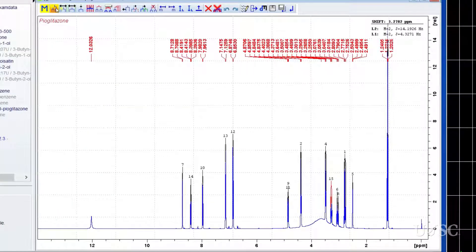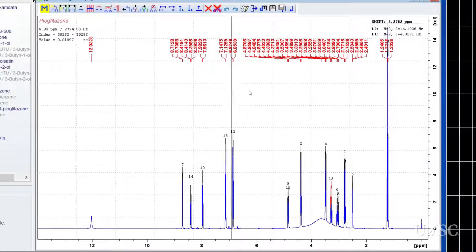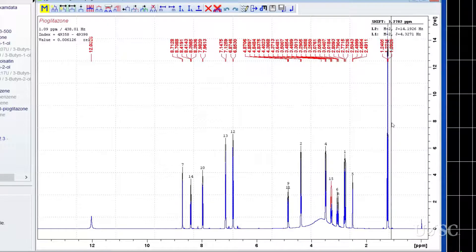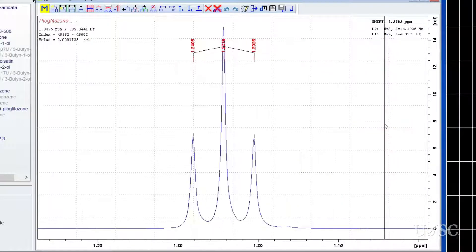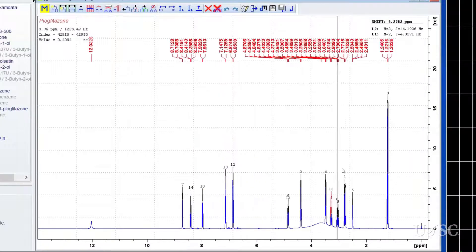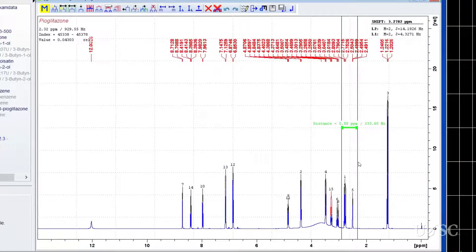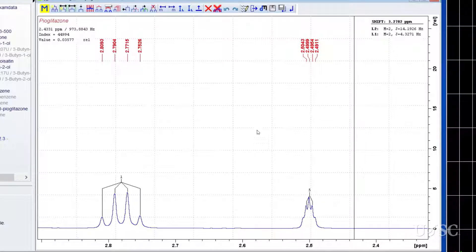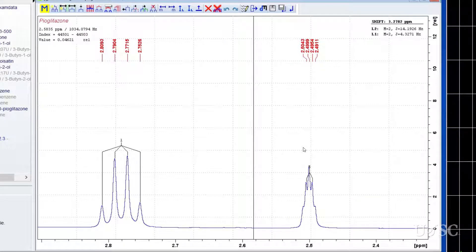We need to expand each multiplet to view the success of each region. Starting with the methyl peak near 1.22 ppm we see a triplet that is correctly detected. Next, we will expand the region between 2.3 and 3 ppm. The peak at 2.5 ppm is from the residual protons from the solvent.